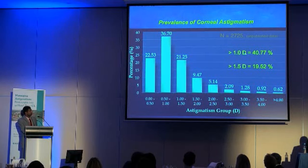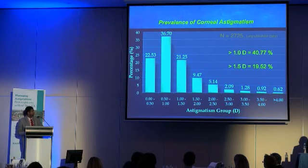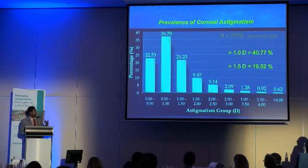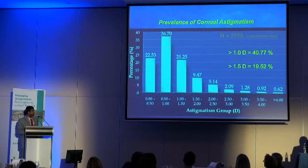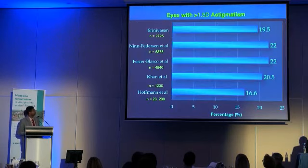In my view, even one diopter is visually significant because I have moved to doing micro-incision cataract surgery, as most of us have, and the amount of surgically induced astigmatism we induce is less. Also, the amount of astigmatism which we can correct with our wound has become much less because we have all moved to micro-incision surgery. So in my hands, one diopter of pre-existing corneal astigmatism is a significant issue to address.